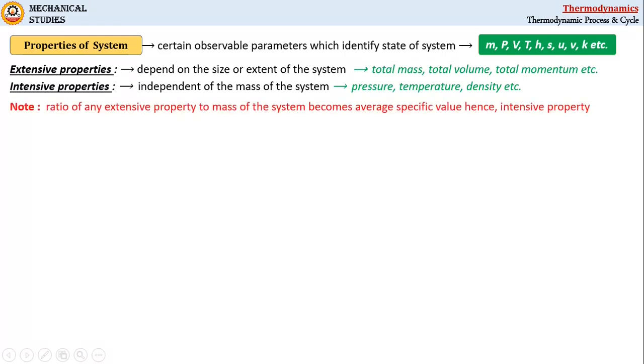Now remember, the ratio of any extensive property to mass of the system becomes an average specific value and hence it is an intensive property.